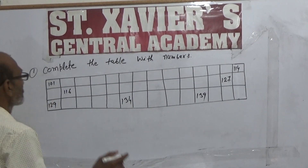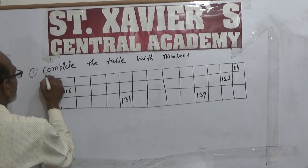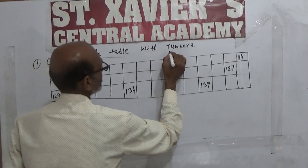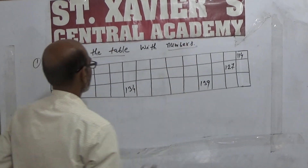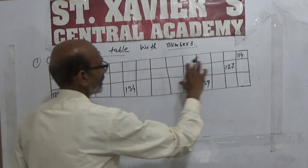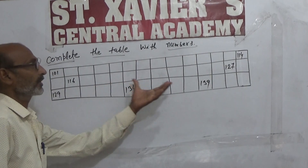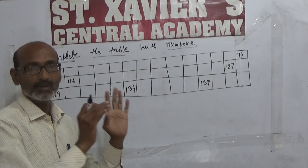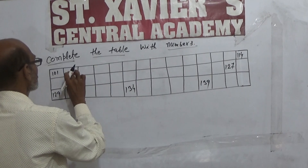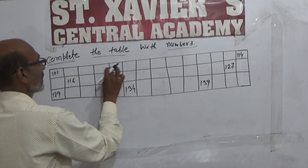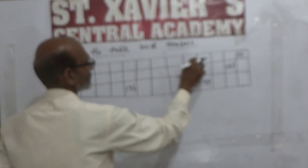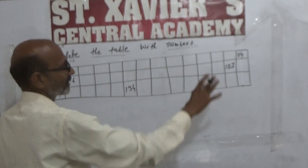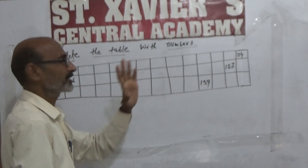Class 2 के लिए है। Complete the table with numbers — यानि टेबल दिया हुआ है, इस टेबल को complete करना है। जो box खाली दिख रहा है, उसमें number लिखना है, इसको complete करना है।